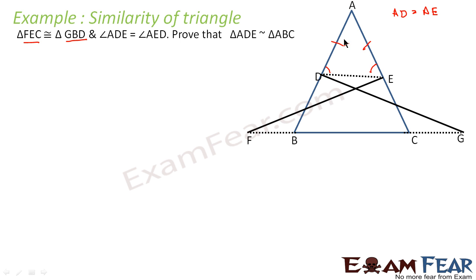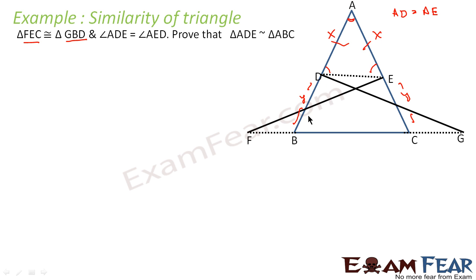If you observe, let's suppose we make AD as X, then AE is also X. In triangles FEC and GBD, both are congruent, so if DB is equal to Y, then EC is also Y. Now, to prove that triangles ADE and ABC are similar, first thing we know is that angle A is common. If we can prove that angle D equals angle B and angle E equals angle C, the problem is solved.